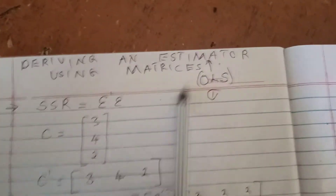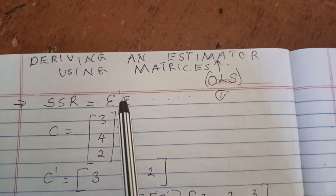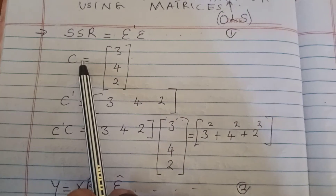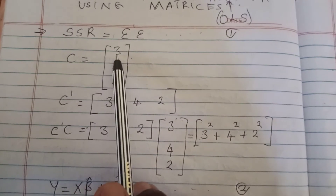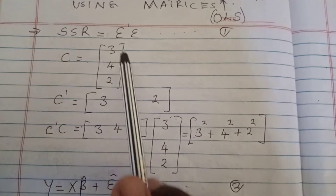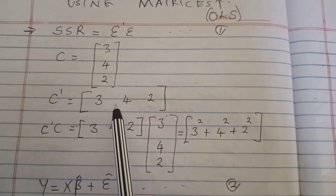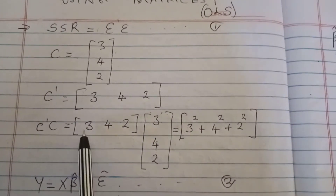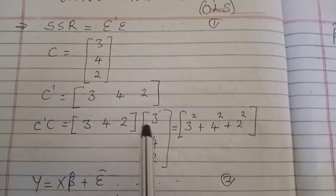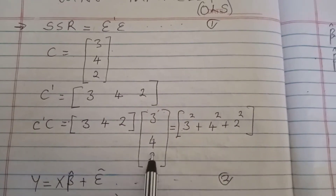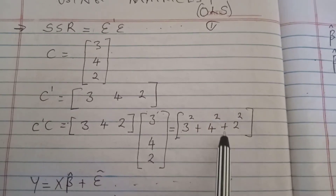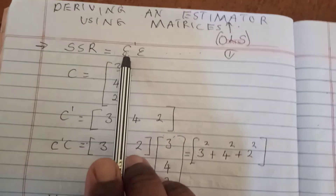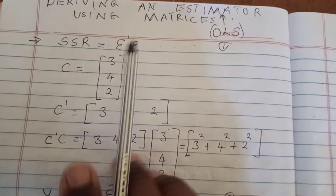Why do we say that the transpose matrix is the same as multiplying squares? To prove that, say you have a column vector with entries 3, 4, and 2. You take the transpose of that vector and then multiply the transpose by the vector itself. You get 3×3 + 4×4 + 2×2, which is the same as 3² + 4² + 2². That is why the Sum of Squared Residuals equals epsilon-transpose multiplied by epsilon.